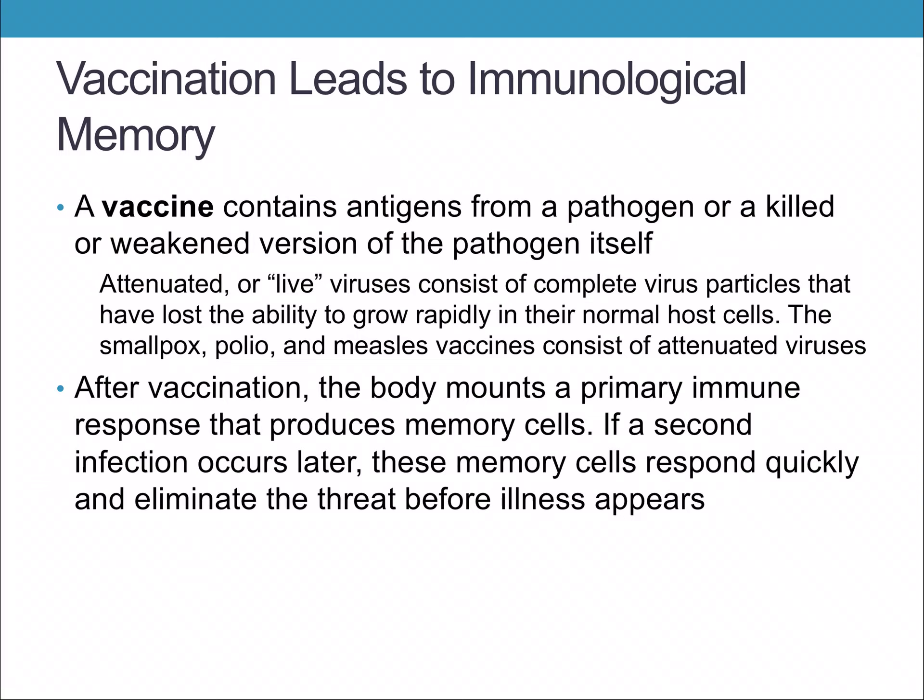A vaccine uses an attenuated — shortened or live — virus: complete virus particles that have lost the ability to grow rapidly. Essentially, you're putting a small, non-infectious part of the virus into the body. It tricks your body into making an immune response as if the virus were there, so you have the memory without actually being sick. After vaccination, the body mounts a primary immune response and produces memory cells. If a second infection occurs, those memory cells respond quickly and eliminate the threat before illness appears.